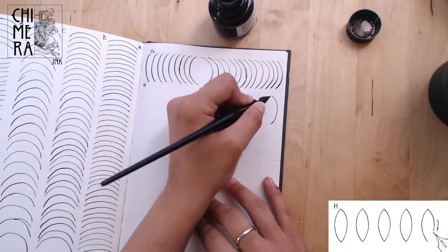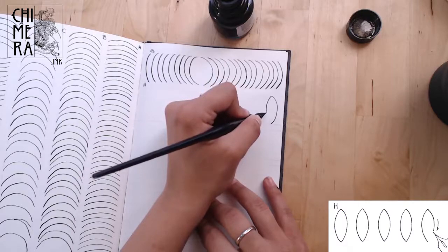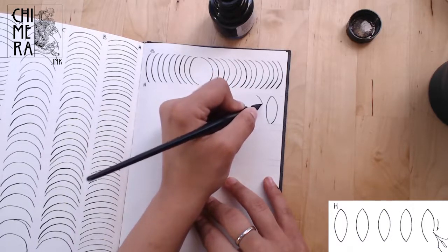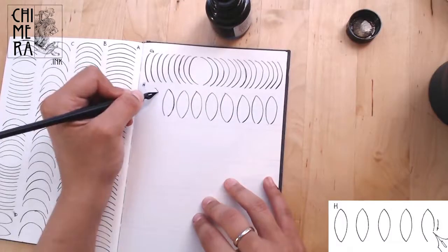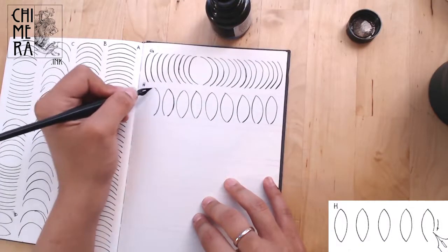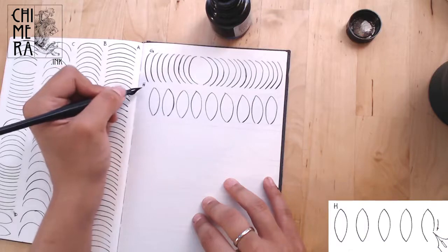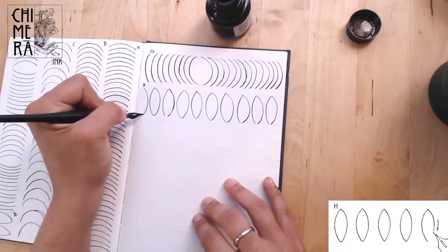H, you make the almond from D, but sitting up. Again, try to keep them slim and symmetrical.